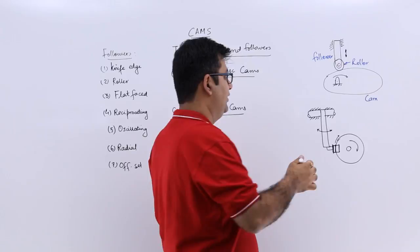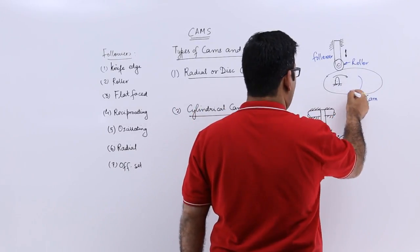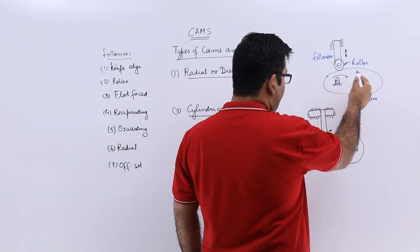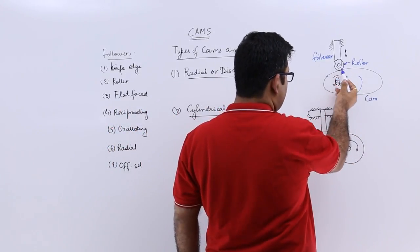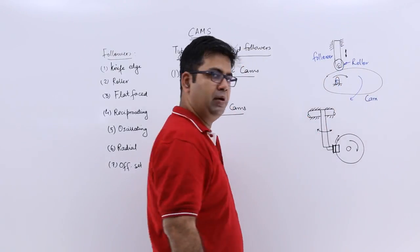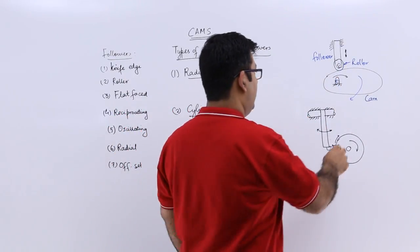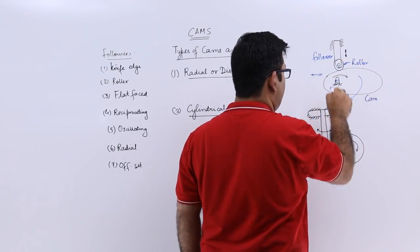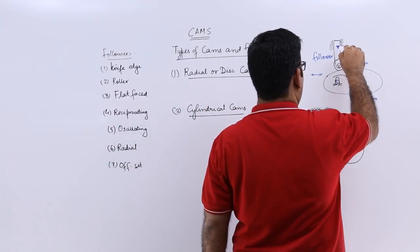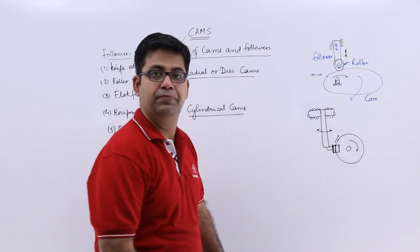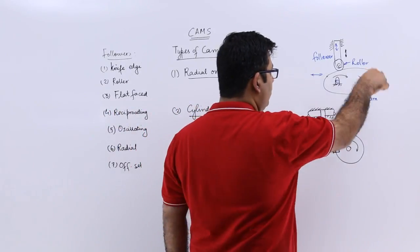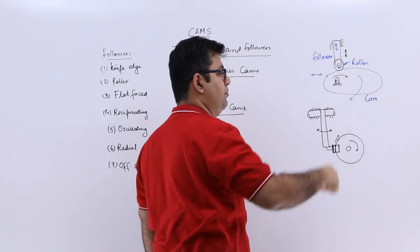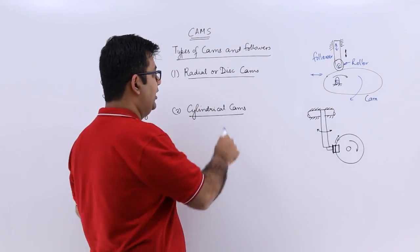This cam rotates about its center. As it rotates, this roller keeps rotating about its own center. But because it is fixed, it cannot translate in the horizontal direction — it can only move with the help of this follower in a vertically up and down direction. So as this cam rotates about this point, this follower starts to reciprocate up and down.